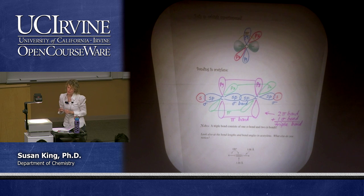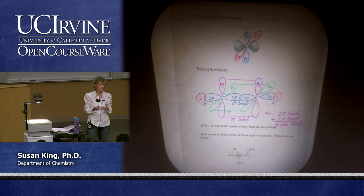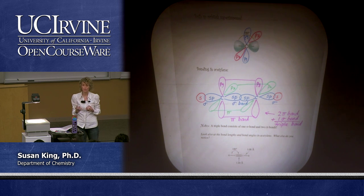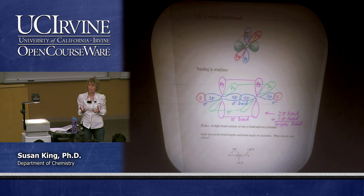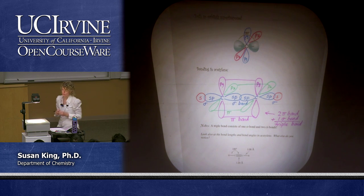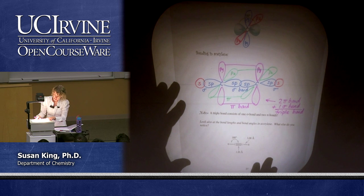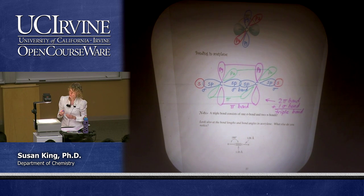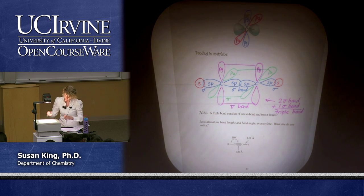A triple bond equals two pi bonds plus one sigma bond. We'll see this with triply bonded carbons and also with other triple bonds — for example, cyanide has a carbon-nitrogen triple bond and we'll see the same thing there. Now let's look at the bond lengths and bond angles in acetylene and compare them to what we saw with the carbon-carbon double bond and single bond.